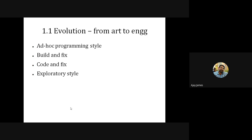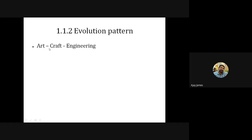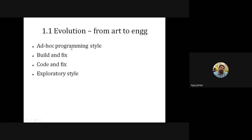From art, software became a craft. People tried to study software developed by earlier artists, and from that they developed some principles. So software became a craft, and from craft it evolved to become engineering — certain principles were laid out. So it went from art to craft to engineering.